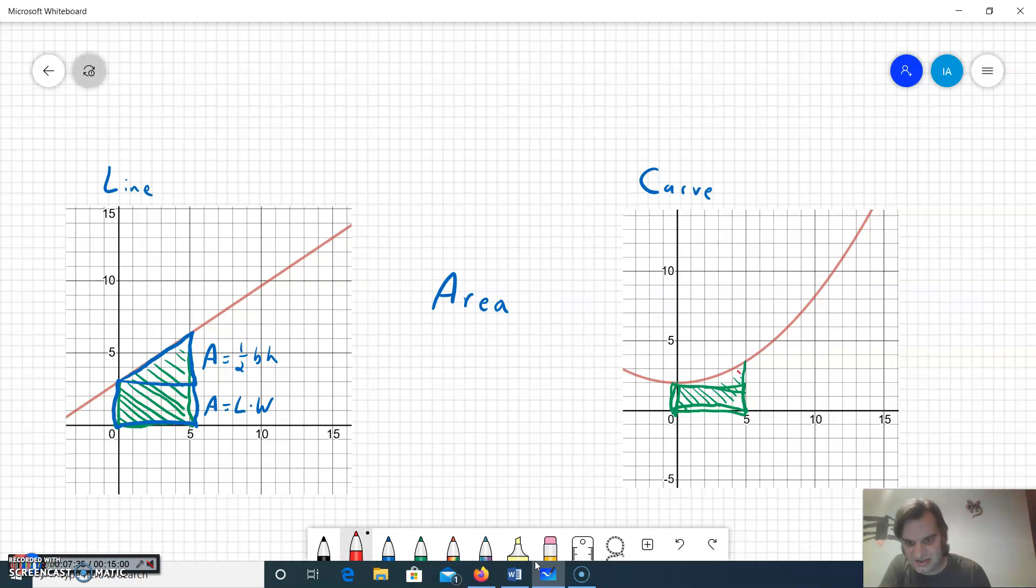Let me kind of shade it in a little bit different color here. This region up here has a curve and that doesn't fit any of my geometric figures because the parabola that I've got graphed there does not make a circle.